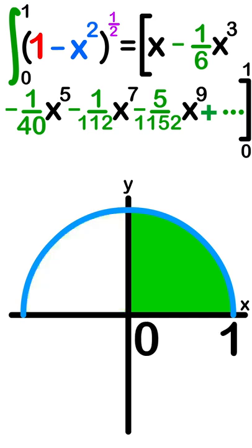From 0 to 1, the area would be one fourth of the circle. Since the radius is 1, the area is pi over 4.